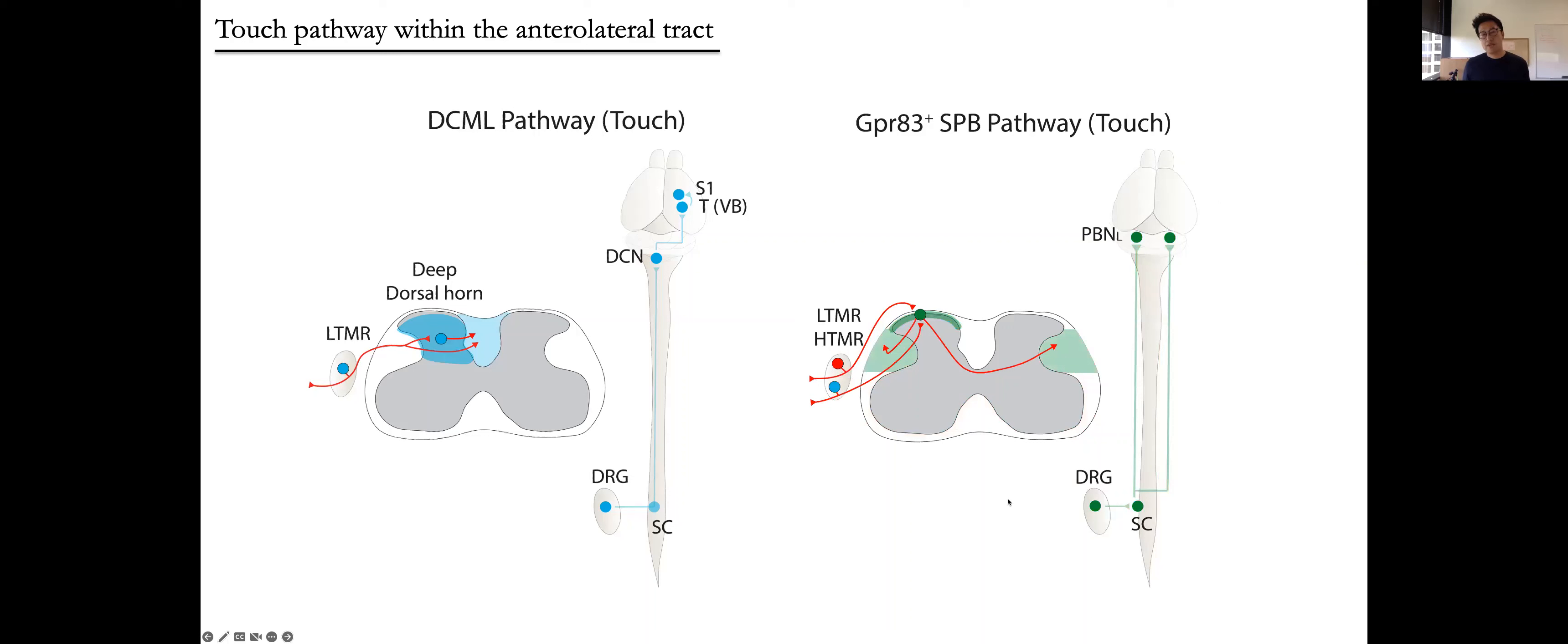However, we show that this novel GPR83-positive ascending pathway forms a unique touch pathway within the anterolateral tract, the pain track. They receive both high-threshold and low-threshold mechanoreceptor input and convey these touch signals to the region in the pons, which in turn broadcasts these tactile signals to downstream brain regions that influence social and emotional behaviors such as amygdala and hypothalamus. We think that this GPR83 pathway forms an affective touch pathway.